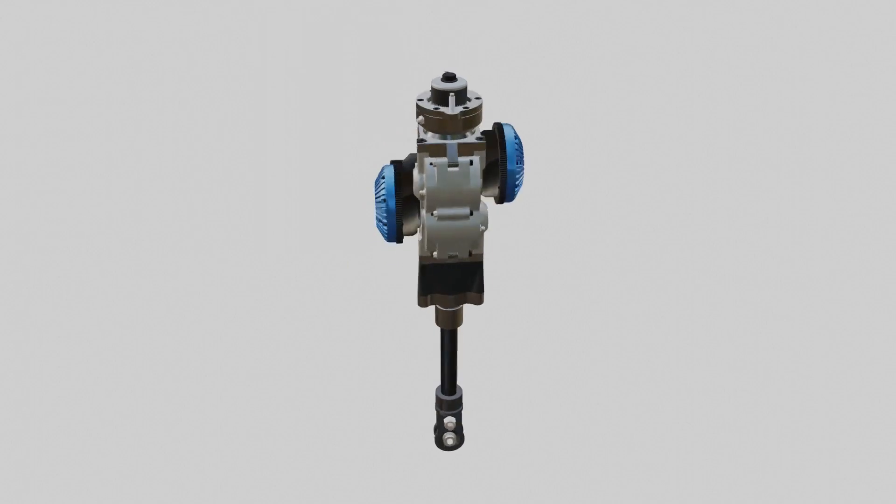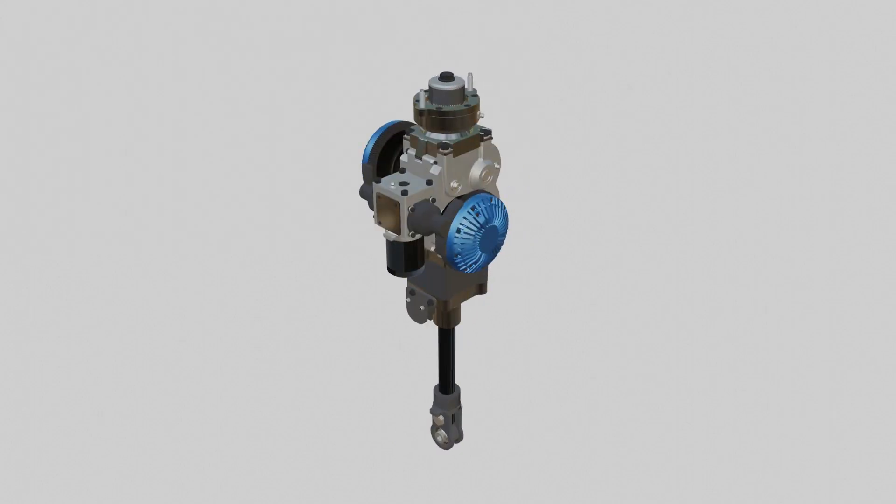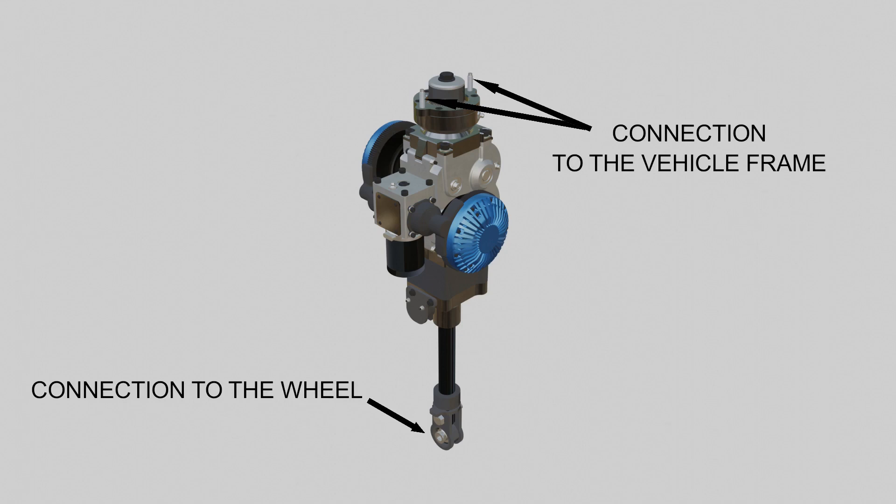This is a continuous slippage magnetorheological actuator for an active suspension system. The actuator is connected at two points: one on the frame of the vehicle, and one on the wheel.